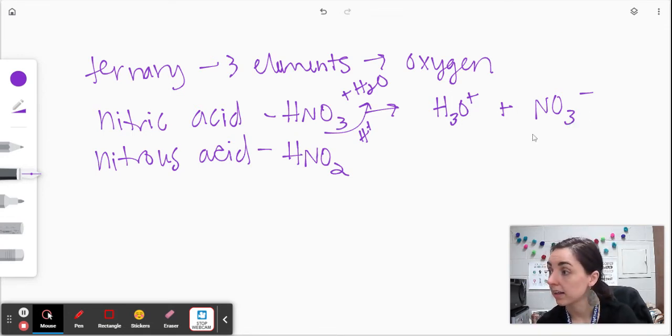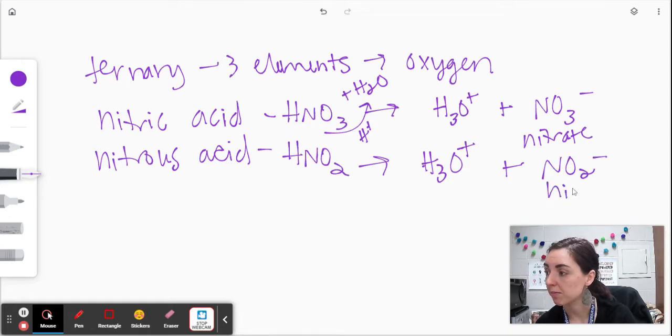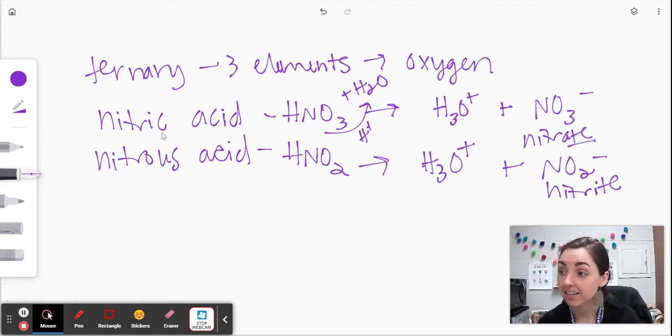So I'm going to write nitrate there. We're going to remember that. Whereas over here, we still have the hydronium, but this is NO2. That becomes the nitrite ion.